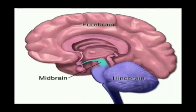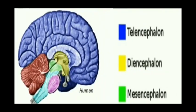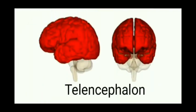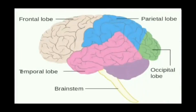The first variants of the membrane. We are looking at the third variants. The second variants are called Telencephalon and Diencephalon. The Telencephalon is the cerebrum. The cerebrum is the main part. These are the lobes.